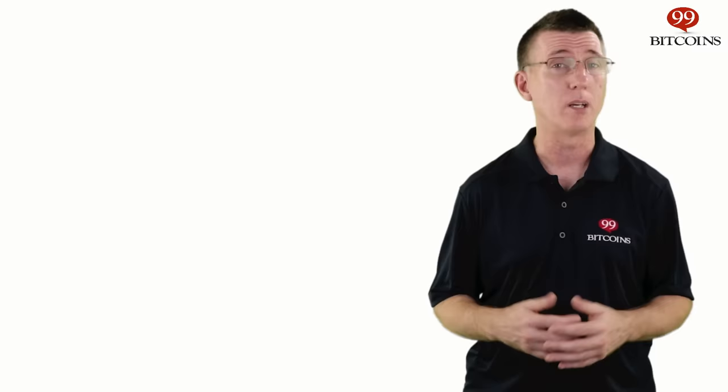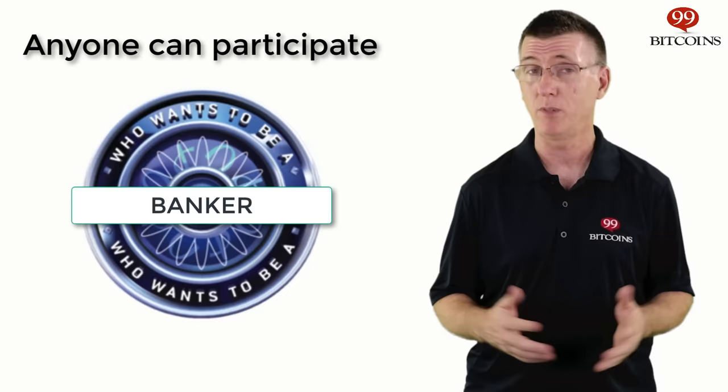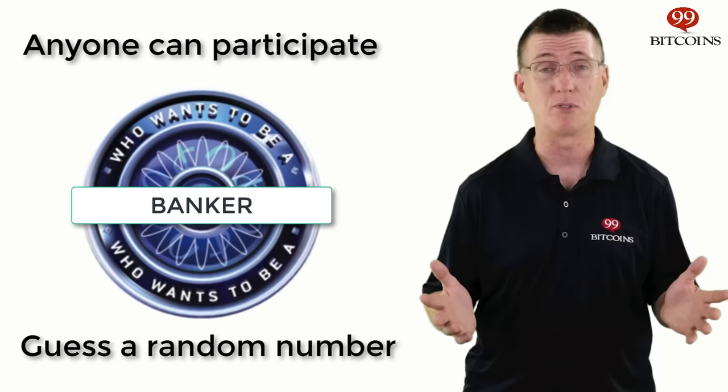But how do you create a system that has a decentralized ledger? How do you give someone the ability to update the ledger without giving them so much power that they'll become corrupt or negligent in their work? The rules of the Bitcoin system, known as the protocol, solve this in a very creative way I like to call "who wants to be a banker?" Anyone who wants to participate in updating the ledger of Bitcoin transactions, known as the blockchain, can do so.